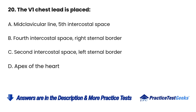20. The V1 chest lead is placed: A. Midclavicular line, 5th intercostal space. B. 4th intercostal space, right sternal border. C. 2nd intercostal space, left sternal border. D. Apex of the heart.